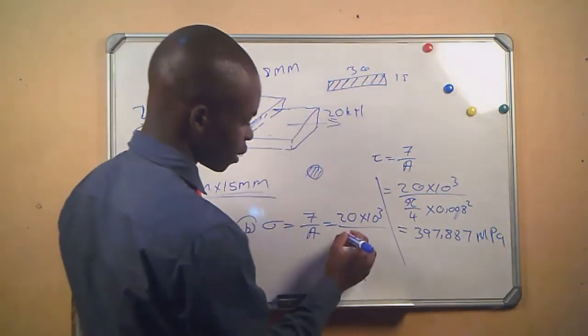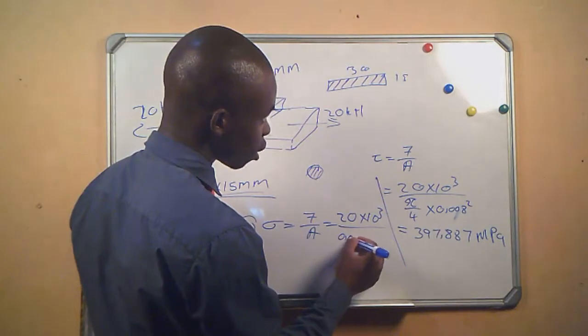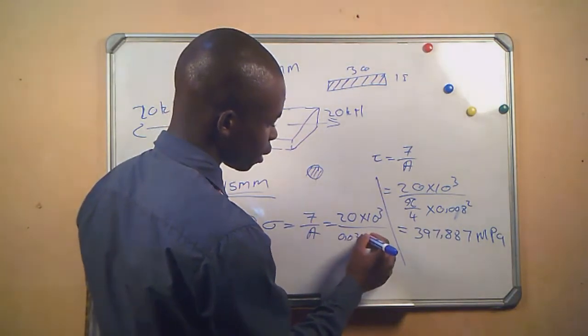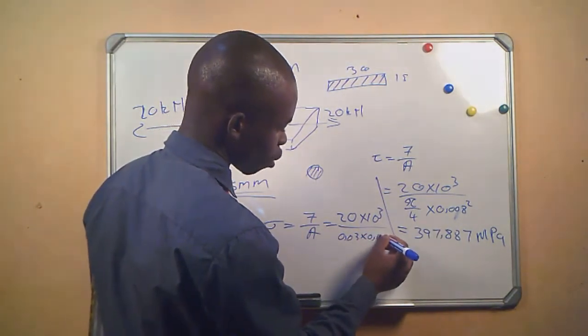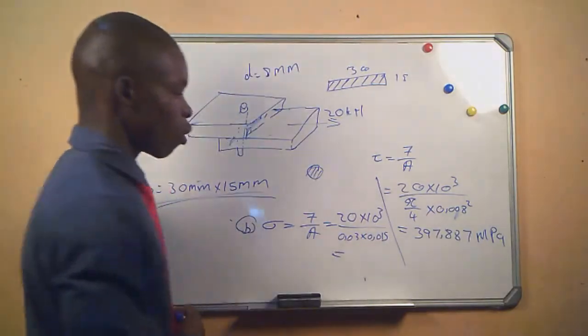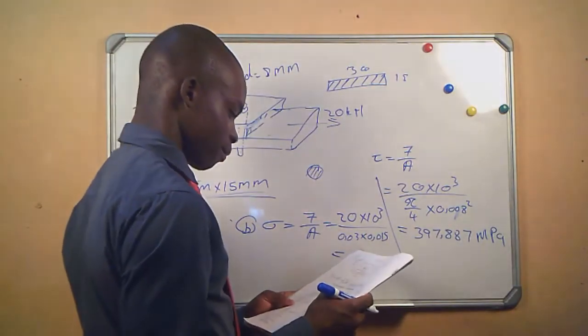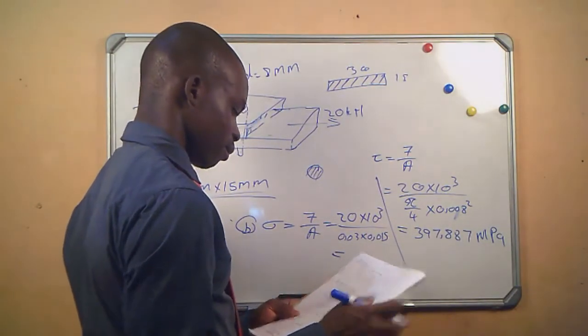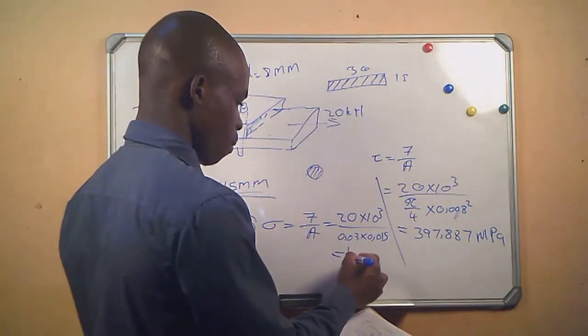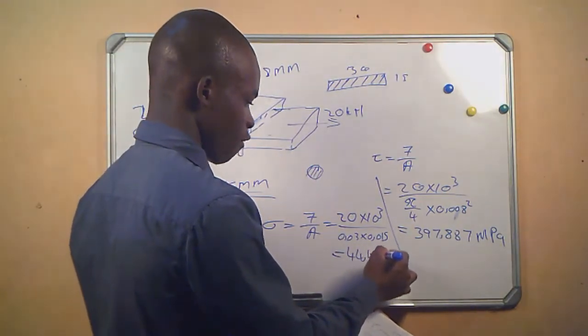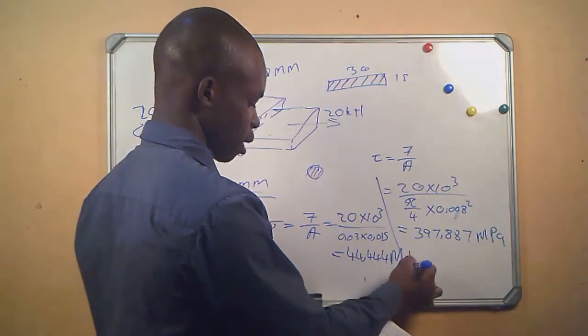So we will say 0.03 times 0.015, and then we are going to get an answer of 44.44 megapascals.